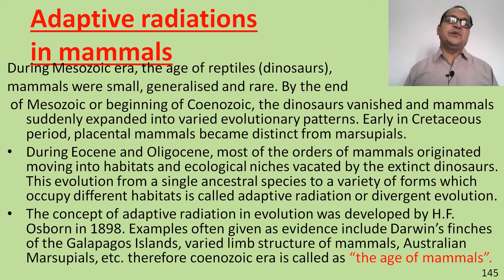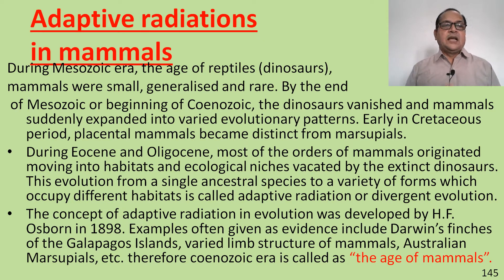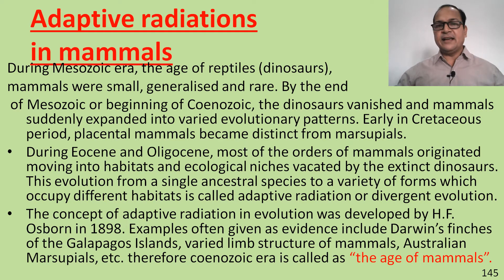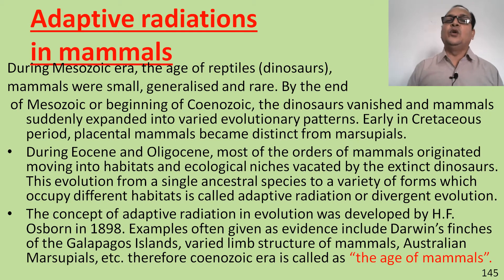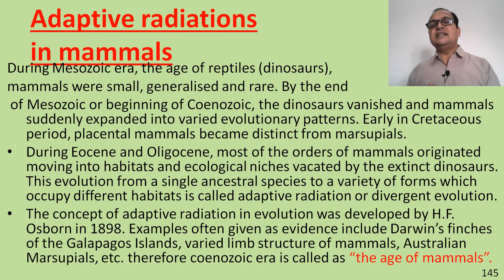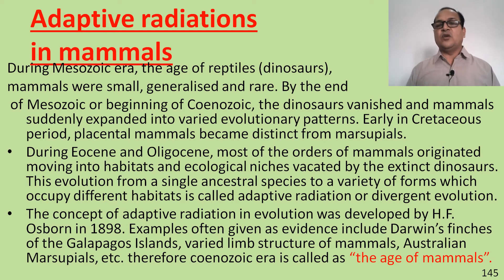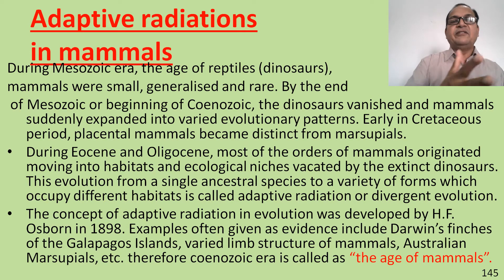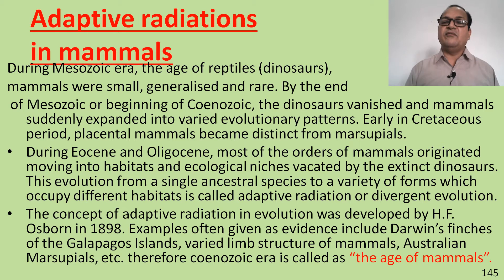Early in the Cretaceous period, placental mammals became distinct from marsupials. During the Eocene and Oligocene, most of the orders of mammals originated, moving into the habitats and ecological niches vacated by the extinct dinosaurs. This evolution from a single ancestral species to a variety of forms occupying different habitats is called adaptive radiation or divergent evolution.